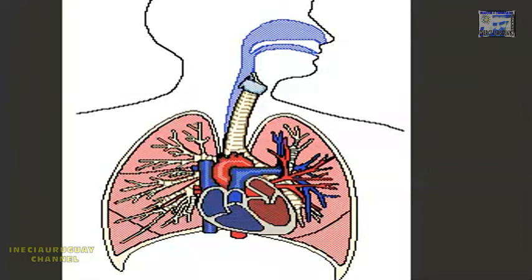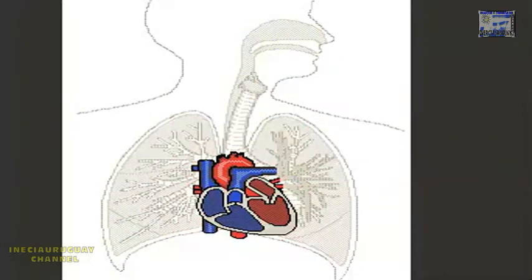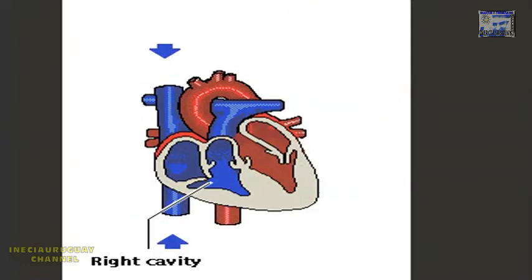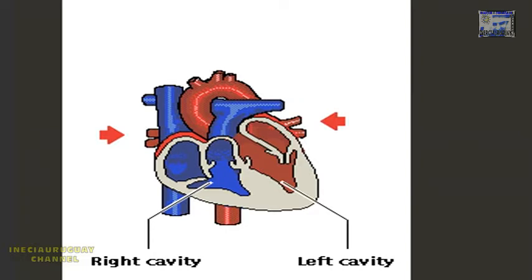The heart is a muscular organ that pumps blood to all parts of the body. It can be divided into two cavities, with two pumps working simultaneously. The right cavity takes in oxygen-poor blood from the body and pumps it to the lungs. The left cavity takes oxygen-rich blood from the lungs and returns it to the body.